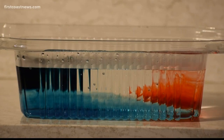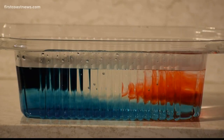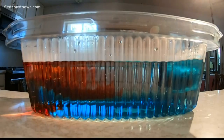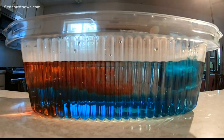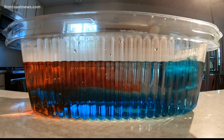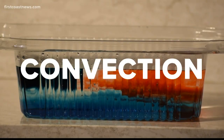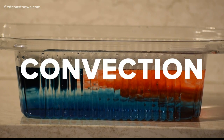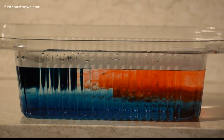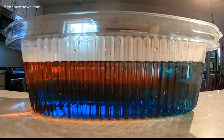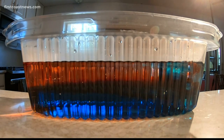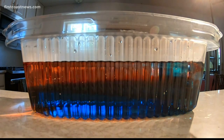Notice how the blue sinks to the bottom and the red rises to the top. Cool air is heavier than hot air, so it's forcing the hot air to rise. That vertical movement is what we call convection — it's the essential ingredient for a thunderstorm. The more convection there is, the bigger and stronger a thunderstorm will be. If anything else, the colors are just fun to watch.